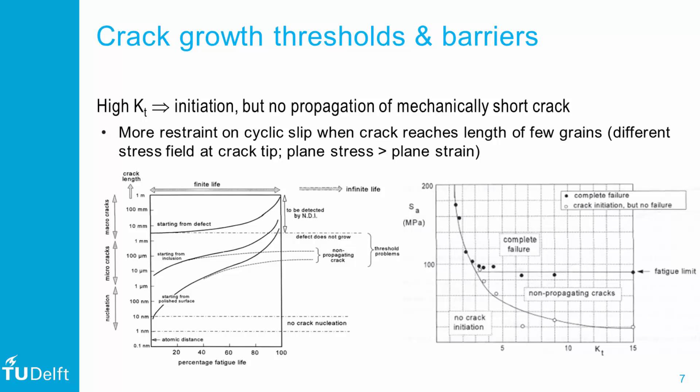An interesting observation in laboratory experiments is the nucleation of microscopically small cracks that did not propagate to macroscopic lengths. This was mostly observed for notched conditions, where a high stress concentration caused crack nucleation which, after developing over a few grains, retarded. This is illustrated in the graph on the left with non-propagating cracks. Away from the free surface, the restraint on cyclic slip may alter, and the crack may encounter a threshold for crack growth.